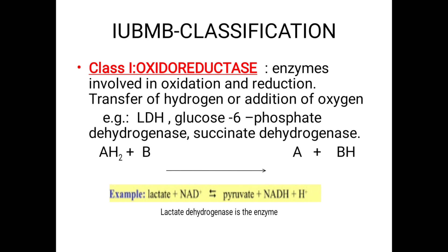The six classes are: Class 1 — Oxidoreductases; Class 2 — Transferases; Class 3 — Hydrolases; Class 4 — Lyases; Class 5 — Isomerases; Class 6 — Ligases. For a five-mark exam answer, you should write what each class is and give one or two examples. Two examples per class is better.